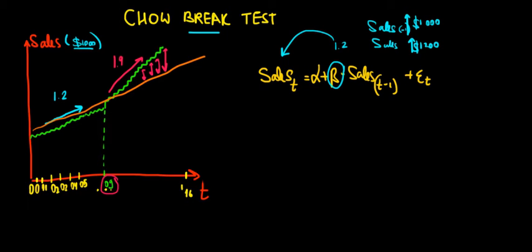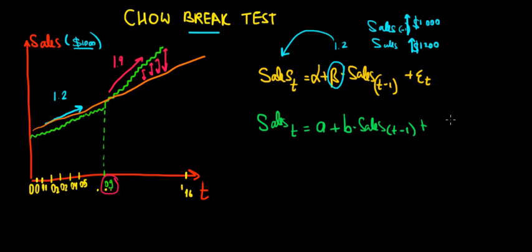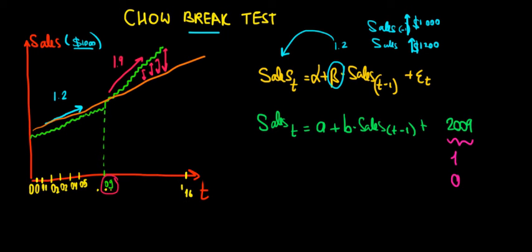We would have a new regression for sales across time, based on different parameters, since we are estimating a new line with new parameters. So we have: Sales = A + B × Sales(t-1) + C × D2009 + ..., where D2009 is our dummy variable that takes the value of 1 if we are in the year 2009 or beyond, and 0 if we are not. The coefficient C will capture the effect of the 2009 dummy on sales.